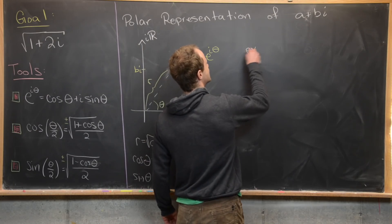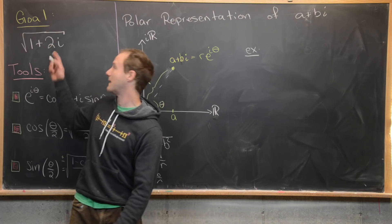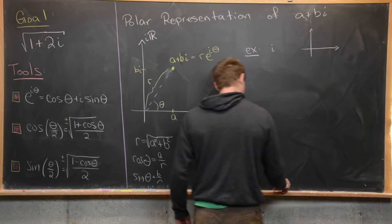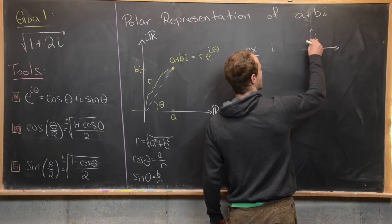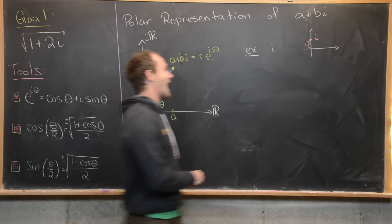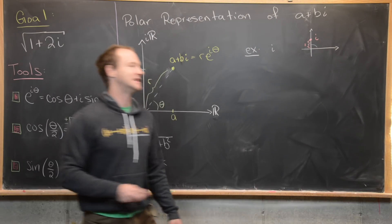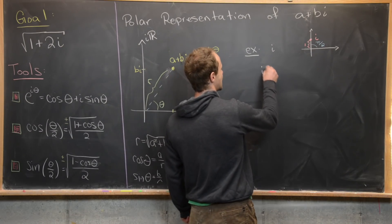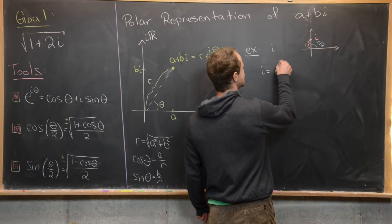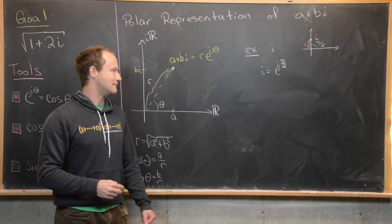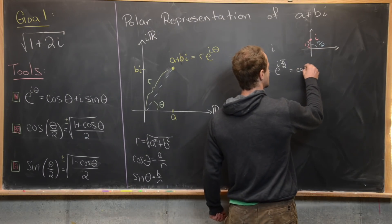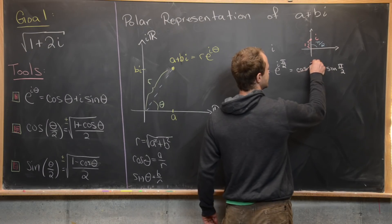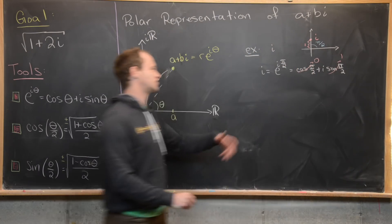Let's do a couple of quick examples to make sure we understand the polar representation before we do our main goal. First, let's think about the number i. Drawing a little complex plane, i is up here and its distance from the origin is one. The angle it defines from the positive horizontal axis is 90 degrees or pi over 2. So i has the polar representation of 1 times e to the i pi over 2. Checking with Euler's formula: cosine pi over 2 is zero and sine pi over 2 is one, so we've achieved the value of i.